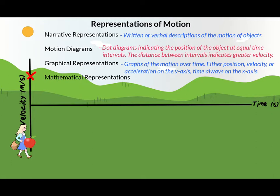Finally, we know the apple speeds up in the negative direction as it moves back toward Amber's hand, with time continuing to pass, so we mark this final velocity at a point along the negative y-axis and further along the x-axis. Connecting each of these points gives us a straight sloped line starting at the initial positive velocity, passing through zero velocity, and ending at a negative velocity.